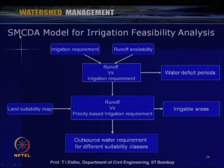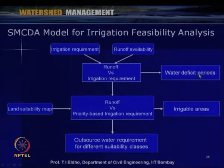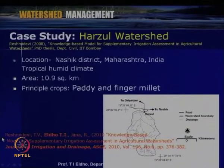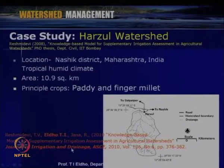The SMCDA model for irrigation feasibility analysis first assesses irrigation requirement, then runoff availability, then compares runoff versus irrigation requirement to identify water deficit periods. Land suitability comes from the fuzzy logic system, and irrigable areas are identified based on priority. The model determines whether supplemental irrigation is needed. Details are published as: 'Knowledge Based Model for Supplemental Irrigation Assessment in Agriculture Watersheds,' Journal of Irrigation and Drainage, ASCE 2010, Volume 136, pages 376–382.